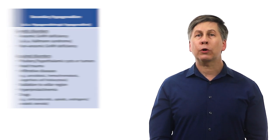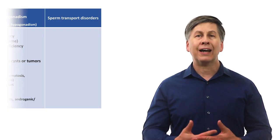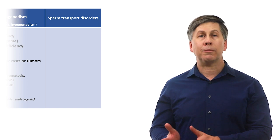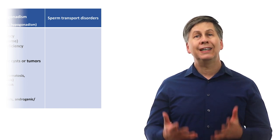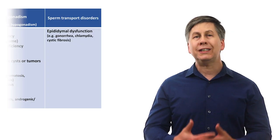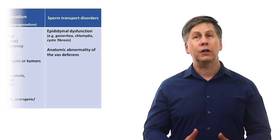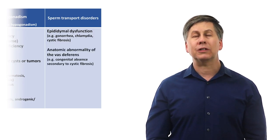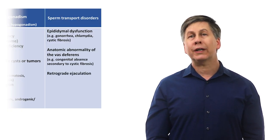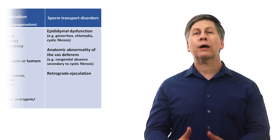In addition to the two forms of hypogonadism, there are sperm transport disorders, in which spermatogenesis is intact, but there is a problem with getting the spermatozoa from the testes to outside of the body. This includes dysfunction of the epididymis, which can be the consequence of a sexually transmitted infection, but is also seen in cystic fibrosis. It includes anatomic abnormalities of the vas deferens, which can be congenitally absent in cystic fibrosis. And it includes retrograde ejaculation, in which during ejaculation, instead of semen being propelled forward out of the penis, it is propelled backwards into the bladder.